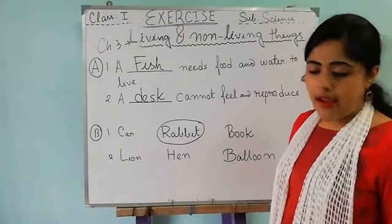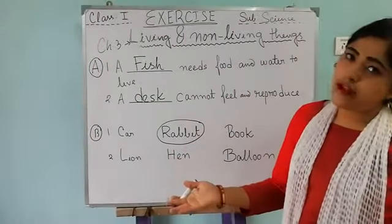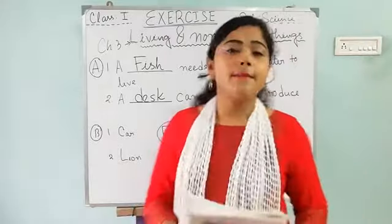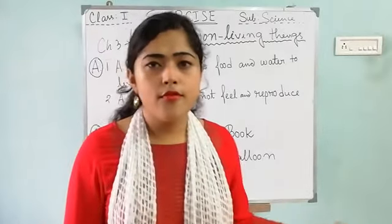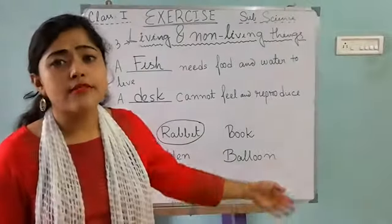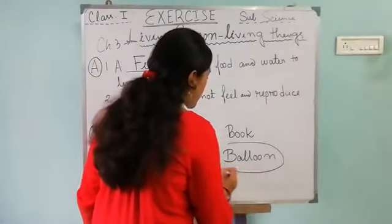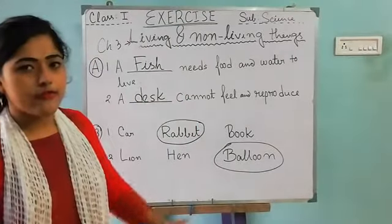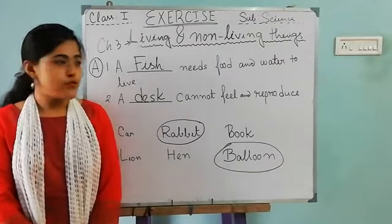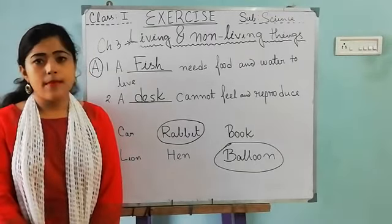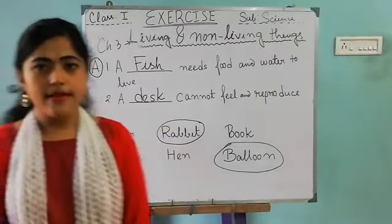Second group: lion, hen, and balloon. Lion is a living thing and hen is also a living thing because they are animals. But balloon is a non-living thing — it cannot move by itself, cannot reproduce, and cannot take breath. So we circle the balloon. Do this at home, write your answers, and match them. Submit after that.